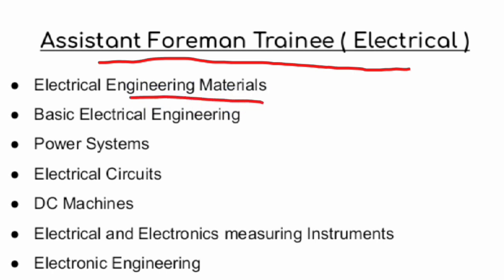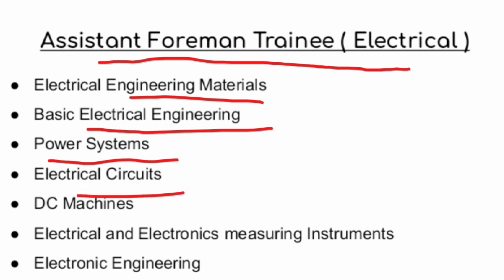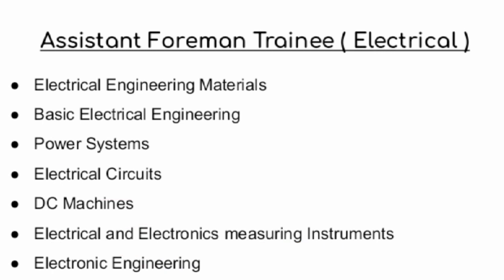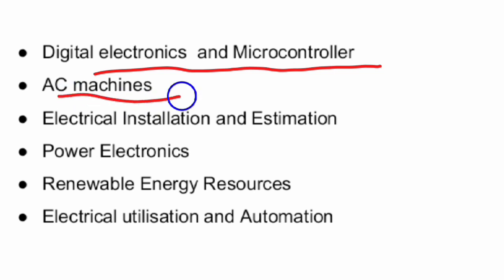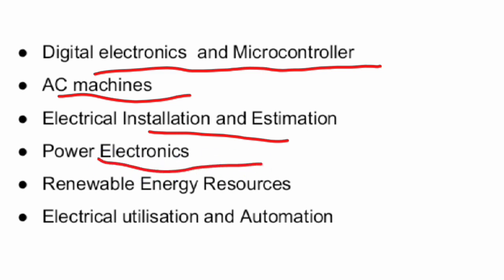The Electrical Engineering subjects include: Electrical Engineering Materials, Basic Electrical Engineering, Power Electronics, Power Systems, Electrical Circuits, DC Machines, Electrical and Electronic Measuring Instruments, Electronics Engineering, Digital Electronics and Micro Controller, AC Machines, Electrical Installations and Estimation, Power Electronics, and Renewable Energy.